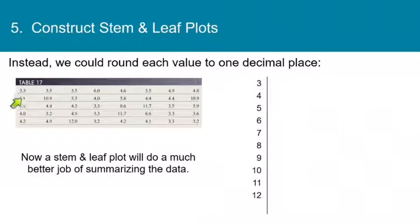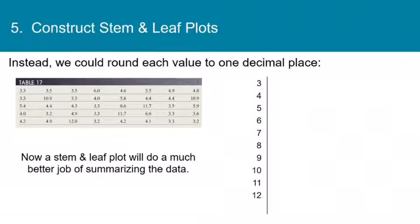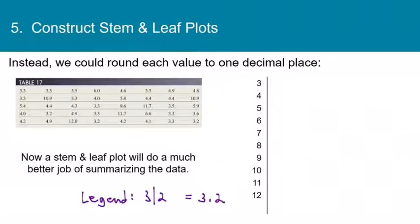Here is the same data rounded to one decimal place. Now not only will it be easier to make the stem and leaf plot, it will be a lot more useful. The stems now go from 3 to 12. Here is the finished stem and leaf plot, and we also need a legend — a stem of 3 and a leaf of 2 equals a value of 3.2. You can see that if turned on its side, the two leftmost bars would be the tallest, and the height drops off to the right.